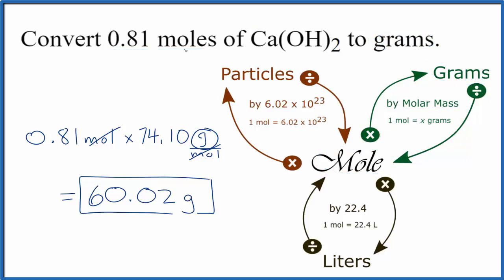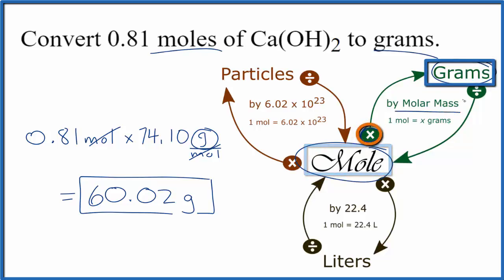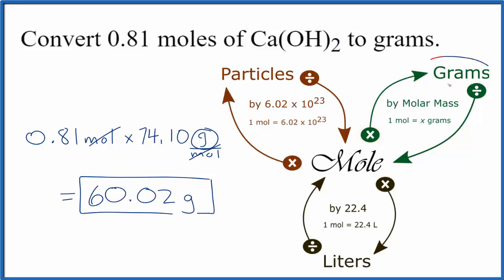So to recap, we are going from moles to grams. We had our moles, and we were going to grams. So we multiplied by the molar mass. If you were given grams and you wanted to get to moles, you do the reverse. You divide by the molar mass.